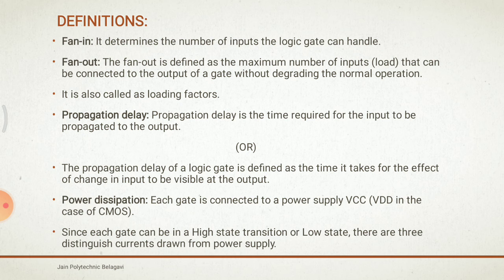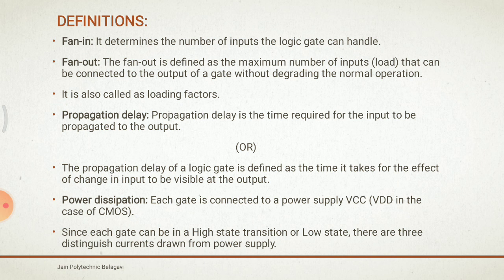Power dissipation: every gate is connected to a power supply — VCC, or VDD in the case of CMOS. The power supply draws a certain amount of current during operation. Each gate can be in a high-state or low-state transition, with different currents drawn from the power supply accordingly. The current drawn during the high state is denoted I_CCH. For transistor-transistor logic, the transition current is negligible, and we calculate the average power dissipation.